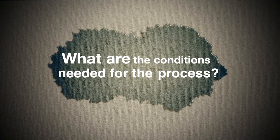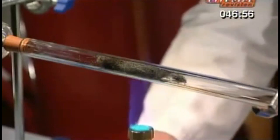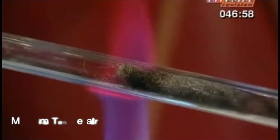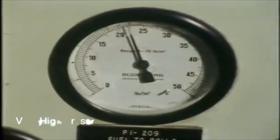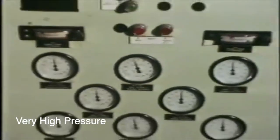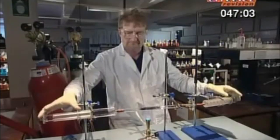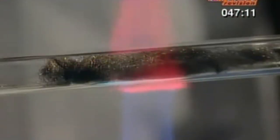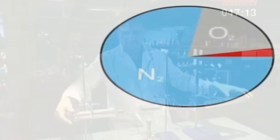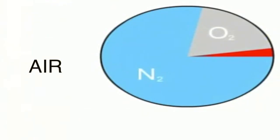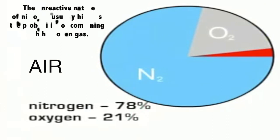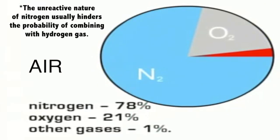According to this, the conditions necessary to make the process possible are medium temperature, a very high pressure, and a catalyst. Apparently, these requirements are due to the reactants, especially nitrogen. Although the atmosphere contains a large amount of nitrogen gas, its unreactive nature hinders the probability of combining with hydrogen gas.